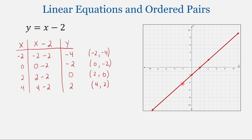Any ordered pair that falls on this line is a solution to this equation. And then any point that's not on the line — for example, (2, 4) — is not a solution to this linear equation.